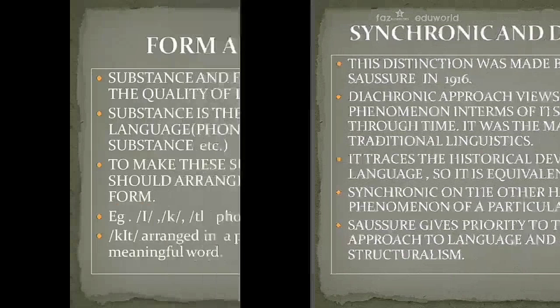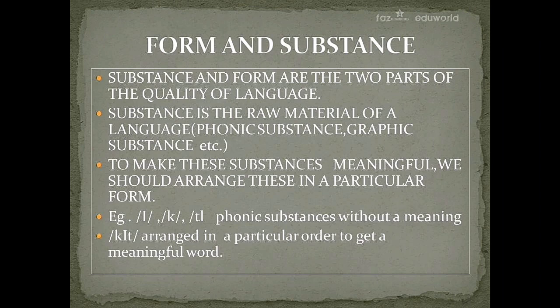Form and substance are the two parts of the quality of language. Substance is the raw material of a language — we have phonic substance, graphic substance, etc. To make these substances meaningful, we arrange them in a particular form. For example, the sounds 'k', 'e', and 't' are raw substances without meaning. When we arrange these three substances in a particular order, we get a meaningful word — that is 'kit'.